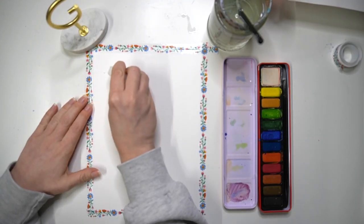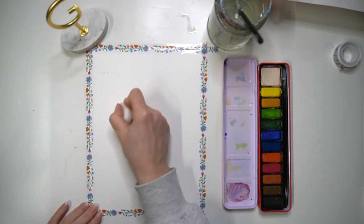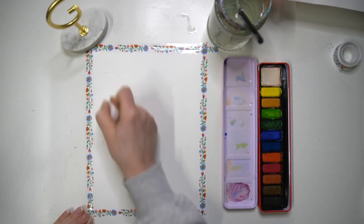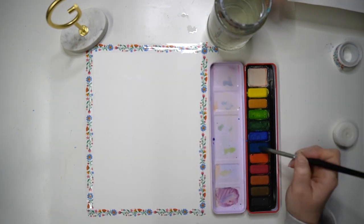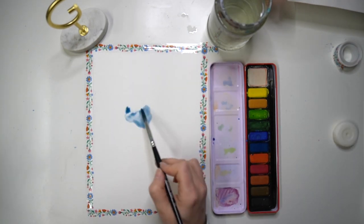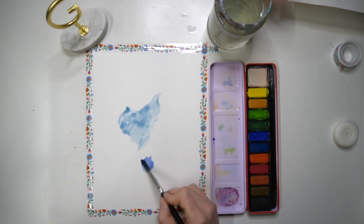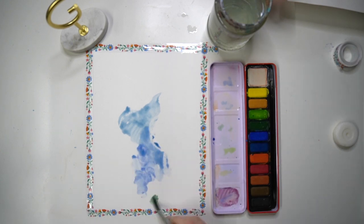This next technique is the wax resist technique and this is one that kids absolutely love. You're going to take a candle or a wax crayon or an oil pastel and draw your drawing over your paper using fairly hard pressure because you want enough of that wax to embed on your paper.